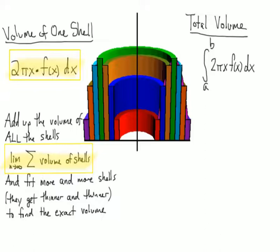As an example, if our graph went from 1 to 2 along the x-axis, and we had a formula for the graph, f(x) equals negative x squared plus 3x minus 2, then we would be able to calculate the exact volume of our solid.